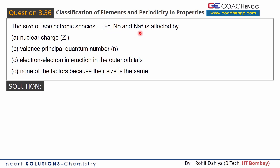We have three species here: F minus ion, neon atom, and Na plus ion. These are isoelectronic species, so their size is affected by which factor?